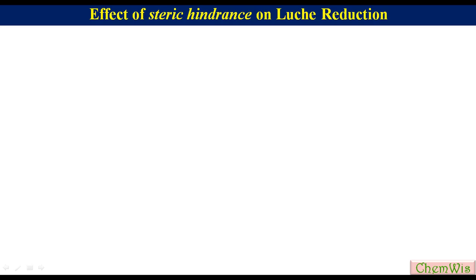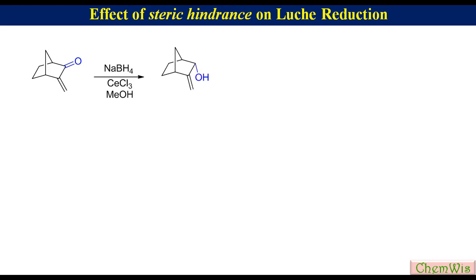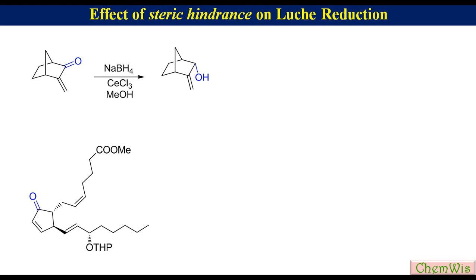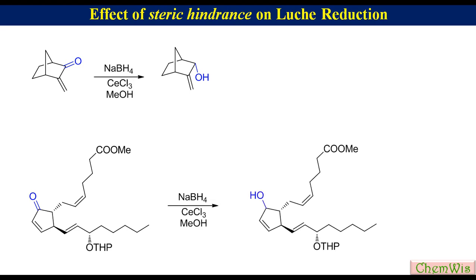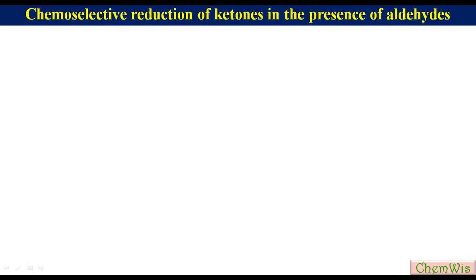Steric hindrance has no detectable effect on the rate of Luche reduction. For example, 3-methylene-2-norbornanone undergoes exclusively 1,2-reduction with the same rate as with sodium borohydride within a minute to produce 3-methylene-2-norborneol. This prostaglandin derivative is reduced to the corresponding enol as a 1:1 epimeric mixture within a minute.